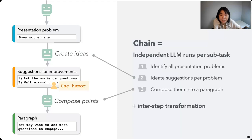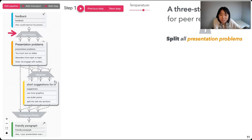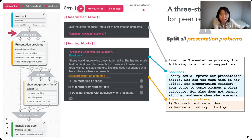Our peer review rewriting task can be completed in three steps, and we built an interface for users to actually play with the chain. In the interface, we use a visual flow to track the underlying structure — which large language model steps are involved and how the data are transformed. Getting into the first step: given the original feedback, we ask the model to split it into a list of separate presentation problems. The prompt is very similar to what we've seen before, though we make it look more structured in the interface.